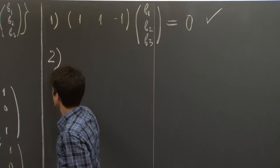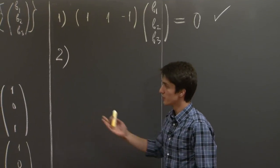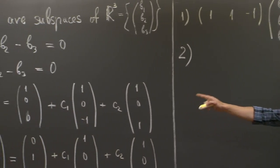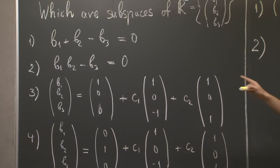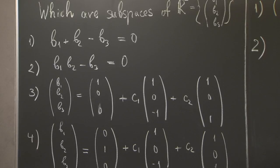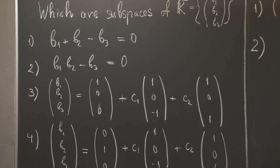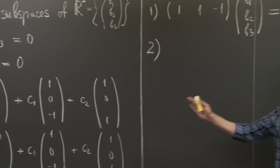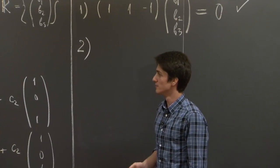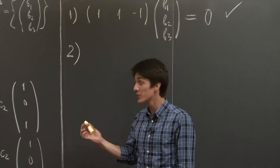What about the second one? Again, we are given a relation between b₁, b₂, b₃, but it's not linear. b₃ is the product of b₁ and b₂. So your guts tell you that this shouldn't be a vector space, but we need to prove why.